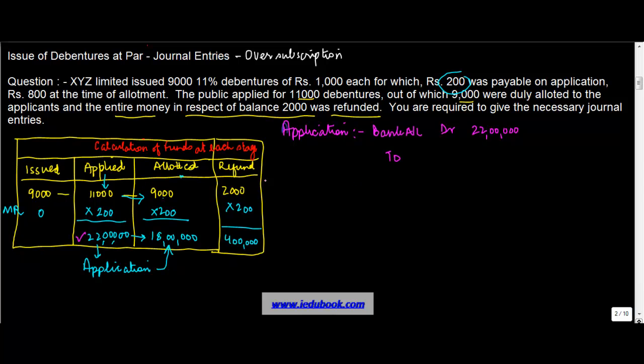What is the reason why did you receive this money? You received this money because of debenture application account. So you write to 11% debenture application account. I am not going to include the narration, but the narration will be being amount received on account of debenture application money on 11,000 debentures at the rate of 200 per share. So we have completed this leg.